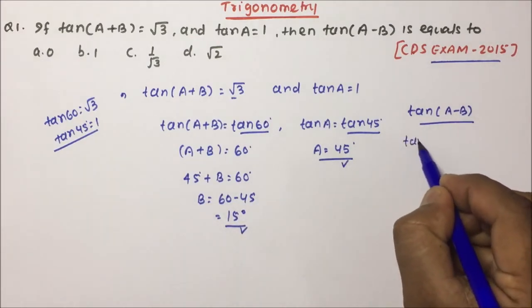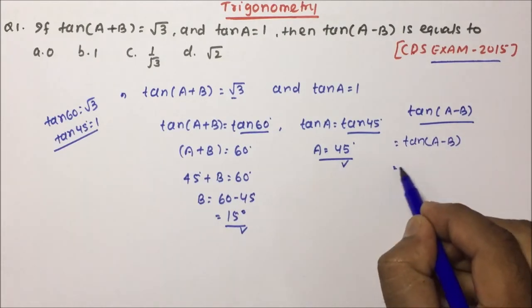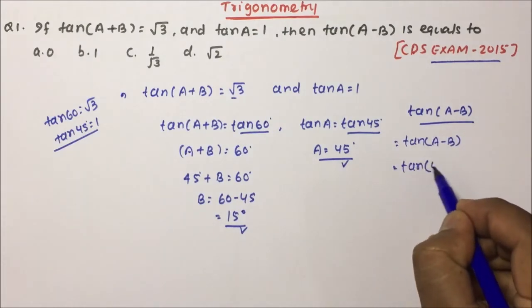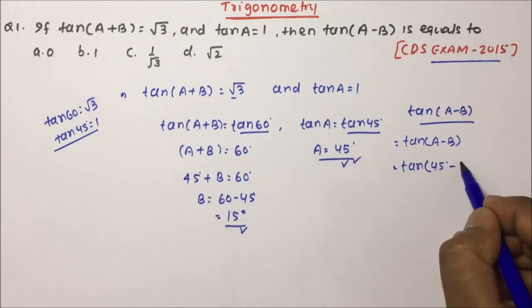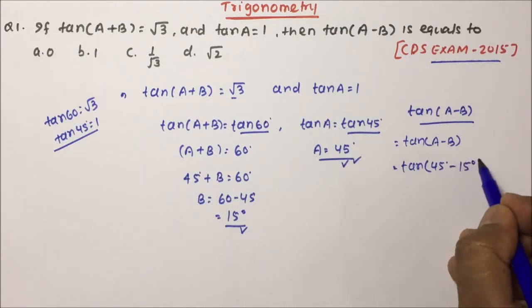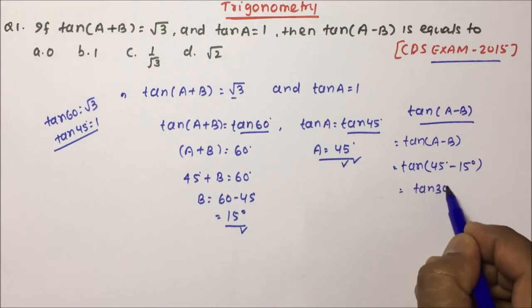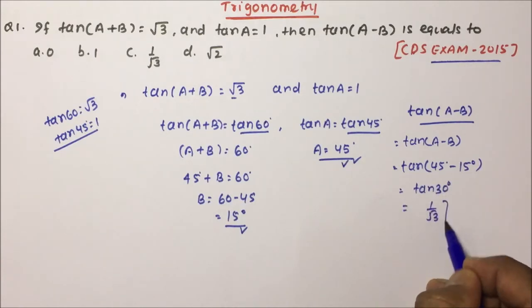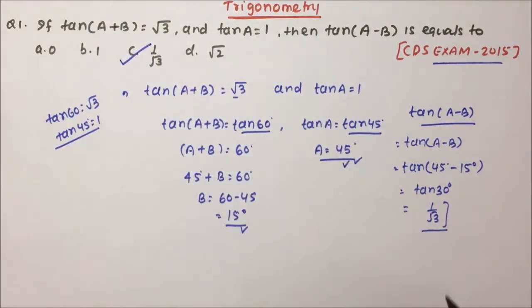We have to calculate tan(A−B). A is 45° and B is 15°, so this becomes tan(45°−15°) = tan 30°, and the value of tan 30° is 1/√3. So option C is the correct answer.